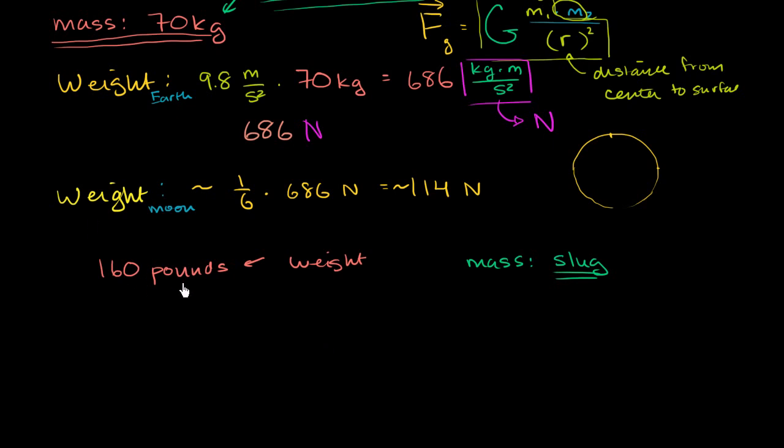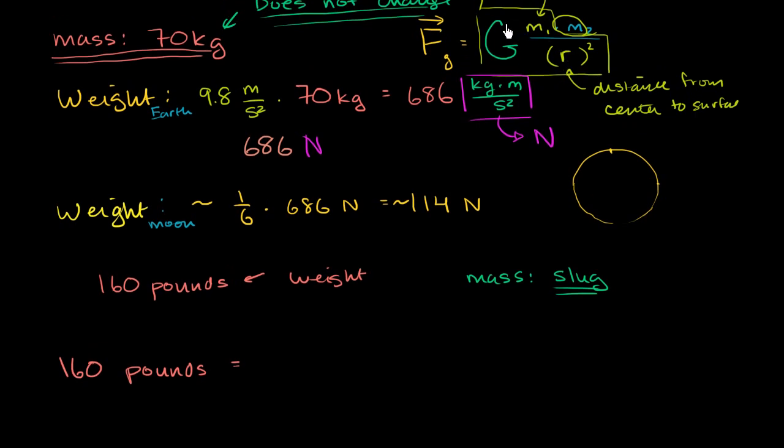So if you wanted to figure out how many slugs you are, so your weight, the force of gravity on you is 160 pounds. This is going to be equal to, if you were to calculate the force of gravity on the surface of Earth. But if you were to do it in imperial units, instead of getting 9.8 meters per second squared, you would get 32 feet per second squared, which is also the acceleration near the surface of the Earth due to gravity in feet and seconds, as opposed to meters and seconds. And then this is times your mass in slugs.